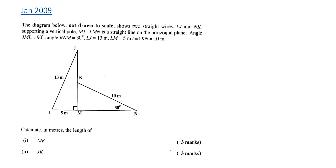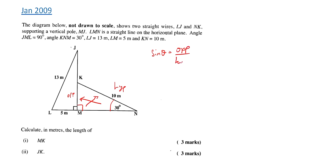We have another question with two triangles side by side. We want to calculate the length of MK in meters. This triangle is a right-angle triangle, so we use Pythagoras's theorem or a trigonometric ratio. We want to find MK — we have the angle of 30 degrees, so MK is the opposite side. KN is 10, which is the hypotenuse, so we use the sine ratio: sin(θ) = opposite/hypotenuse.